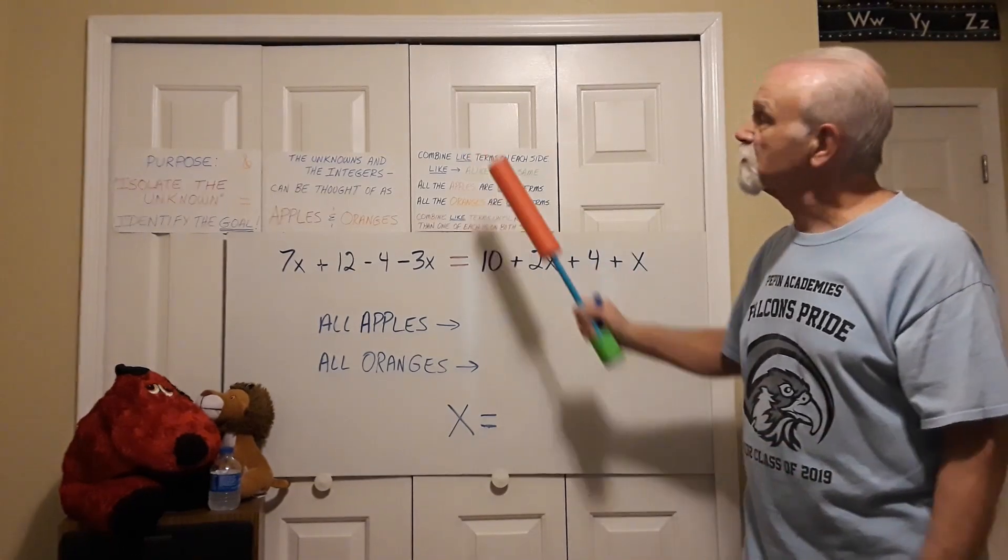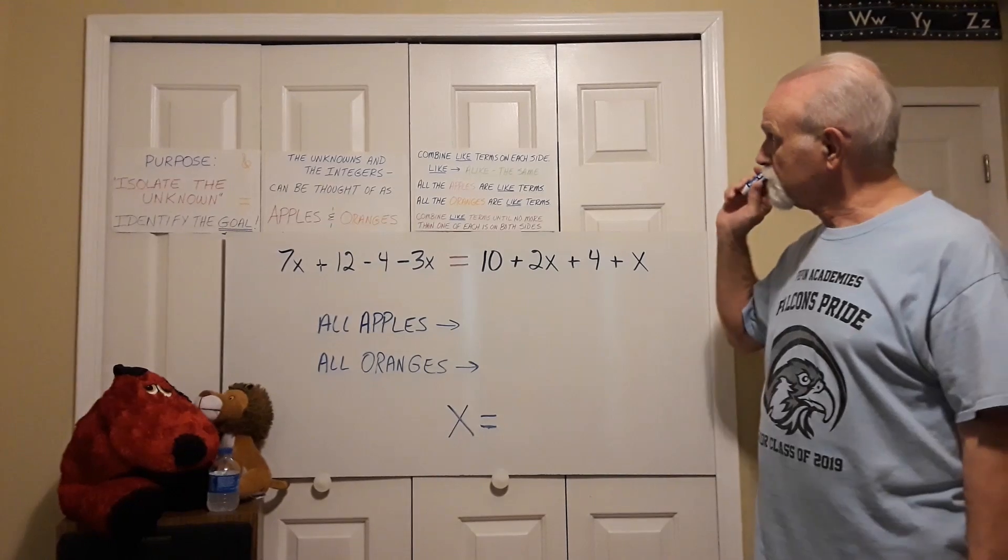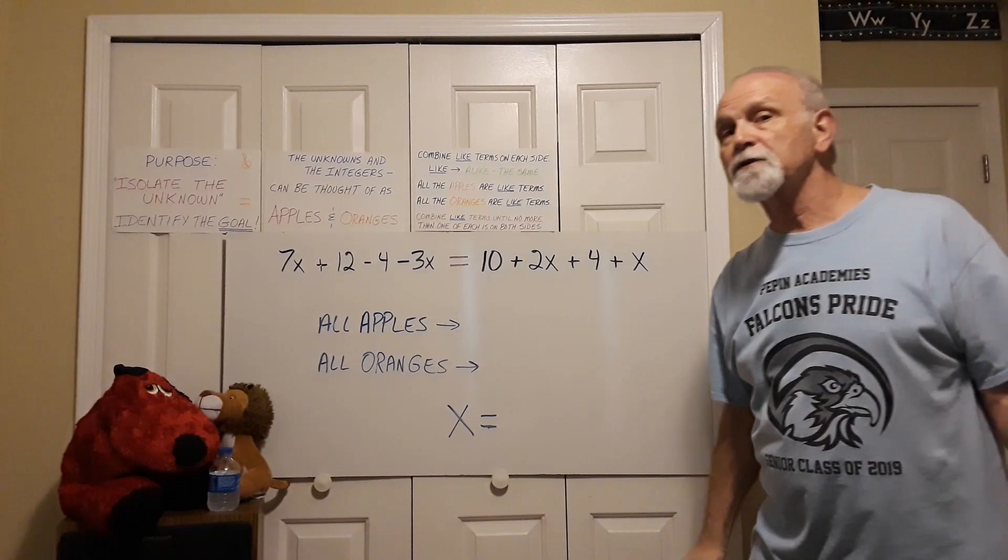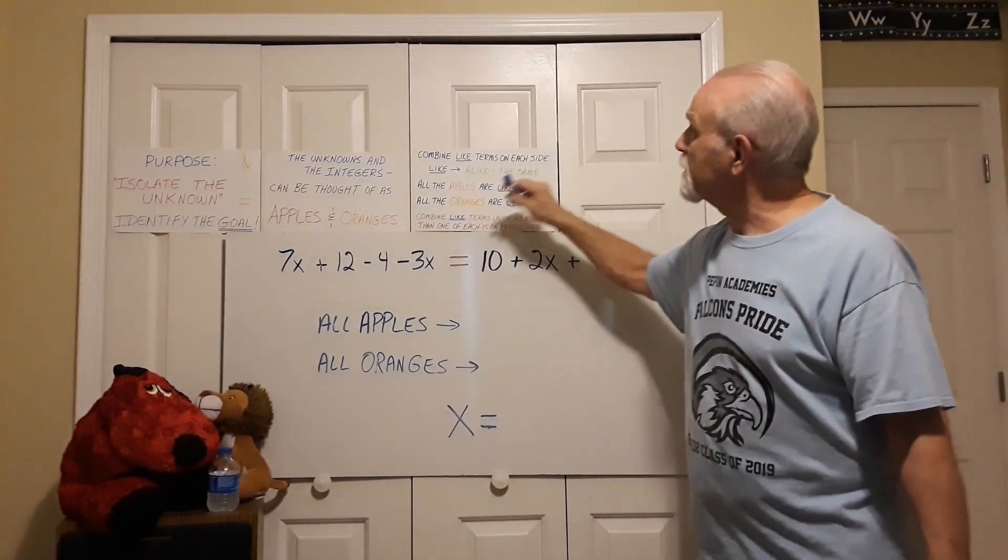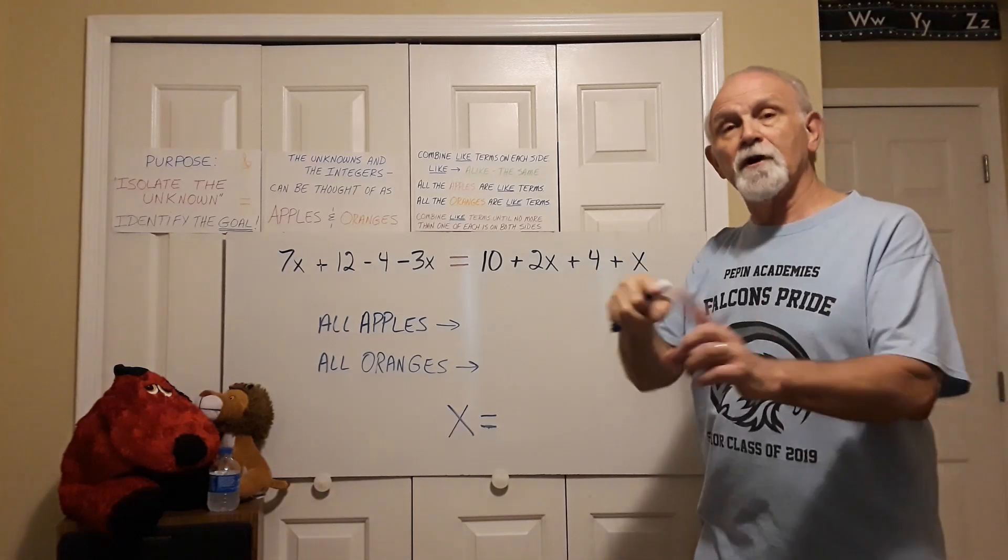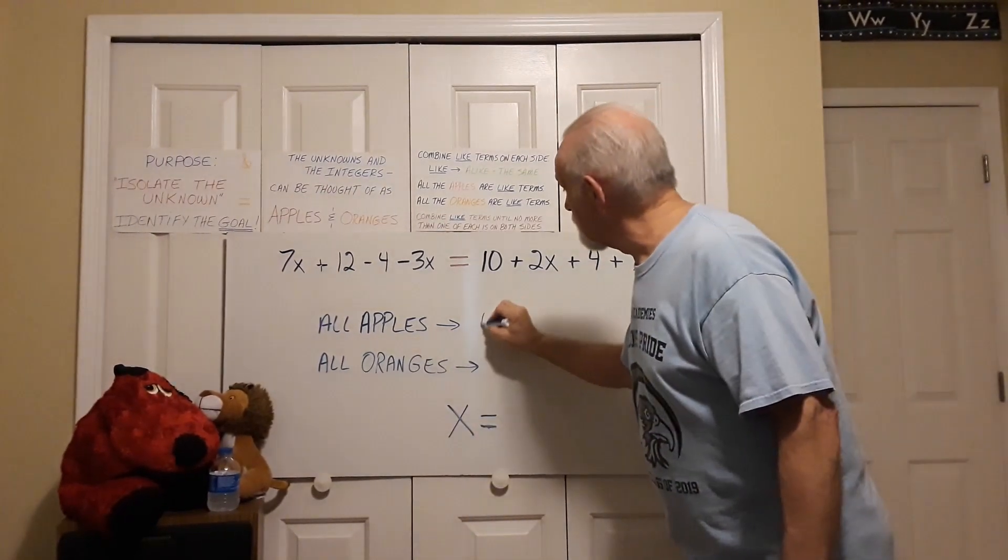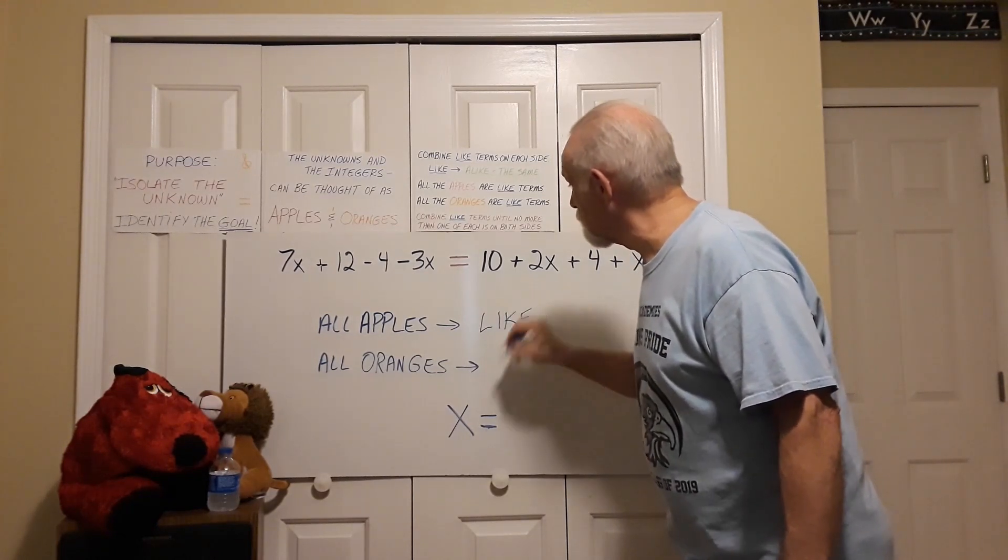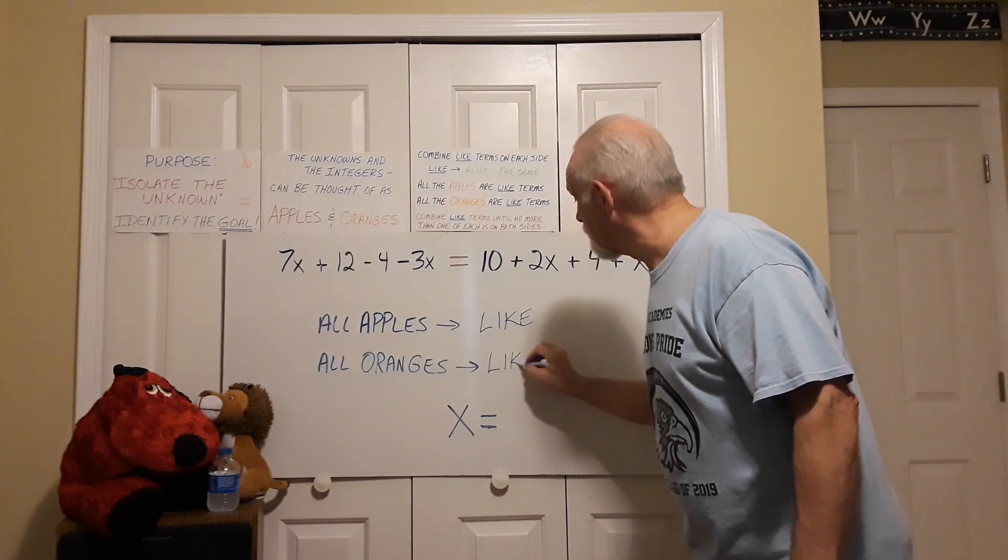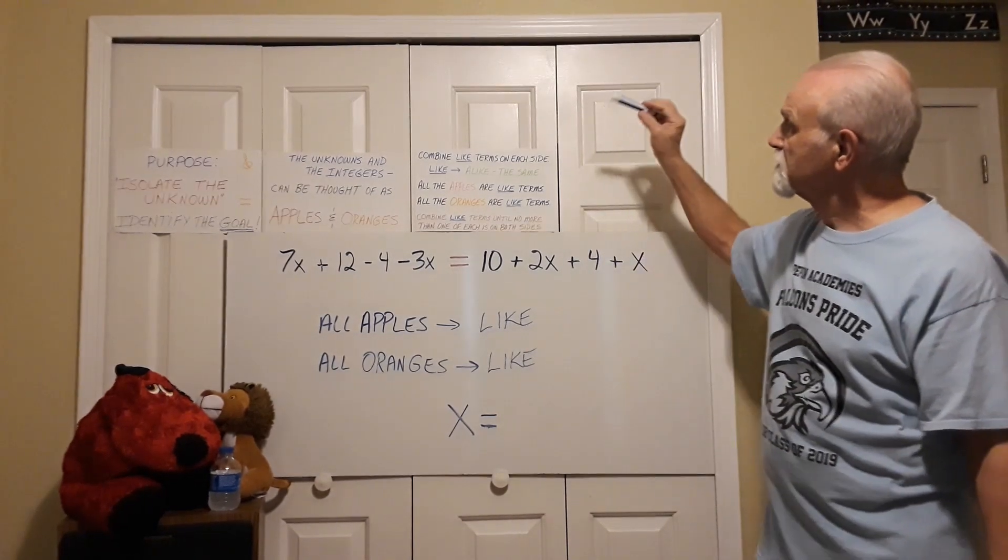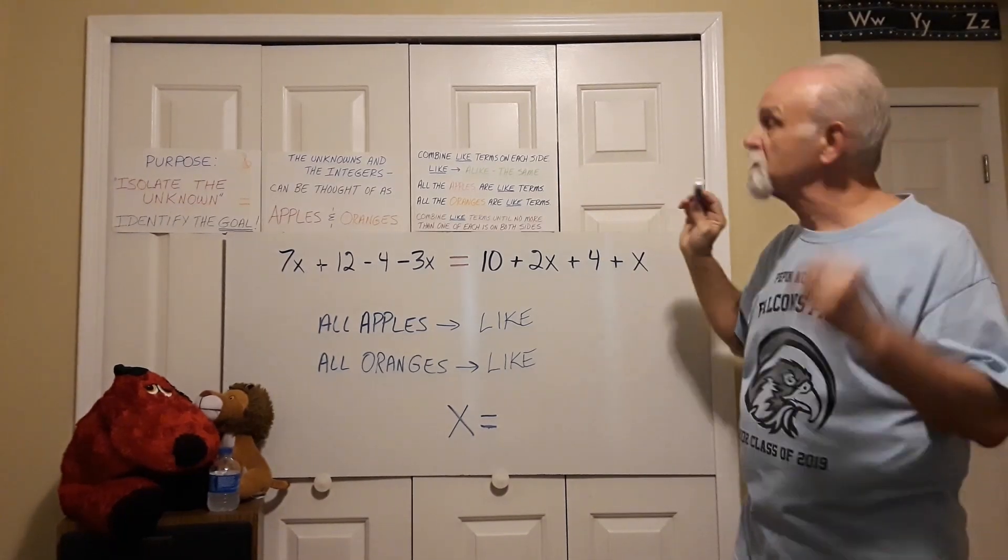Today's lesson is we're going to start combining the terms, and the terms that we're going to combine are the apples and the oranges. So you're going to see this term come up a lot, like, like terms. That doesn't mean you have to like them. It doesn't mean you can dislike them if you don't like, but what that means, this word like comes from the word alike. So some of you are alike in some respects. Some of you are not alike in some respects. All of the apples are alike. So we call those like terms. All of the oranges are alike. They're all the same thing. That's why we call them like terms.